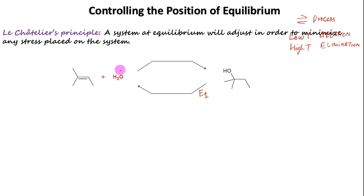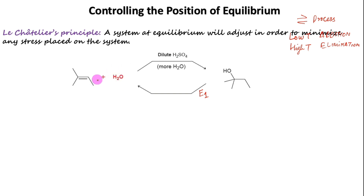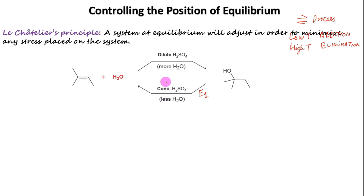Therefore, to favor the forward reaction — the formation of alcohol — we add more water, meaning dilute acid is to be used. On the other side, removing water from the reactant side causes the equilibrium to favor reactants by eliminating water from alcohol, meaning the alcohol dehydrates to establish new equilibrium concentrations. So if we want to favor elimination, we use less water — that means concentrated acid has to be used.